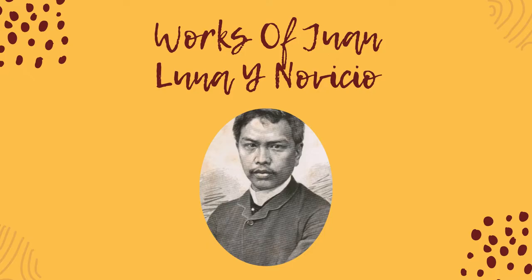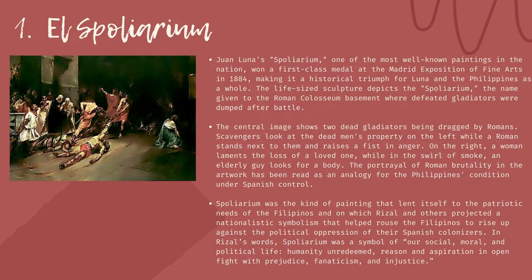Analysis of the important historical information in the document. Works of Juan Luna y Novicio. First: El Spolarium. Juan Luna's Spolarium, one of the most well-known paintings in the nation, won a first-class medal at the Madrid Exposition of Fine Arts in 1884, making it a historical triumph for Luna and the Philippines as a whole. The life-sized work depicts the Spolarium — the Roman Colosseum basement where defeated gladiators were dumped after battle. The central image shows two dead gladiators being dragged by Romans. Scavengers look at the dead man's property on the left while a Roman raises a fist in anger.